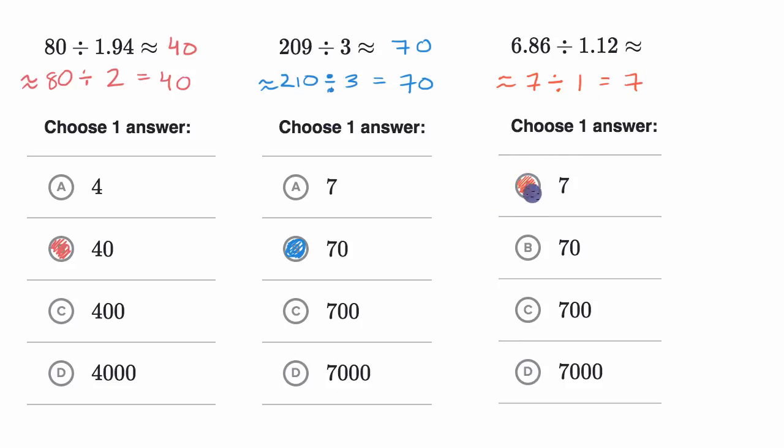Now once again, it's very important to realize these are estimations. It's not going to be exactly equal to seven. But it's definitely gonna be much closer to seven than 70, 700, or 7,000.